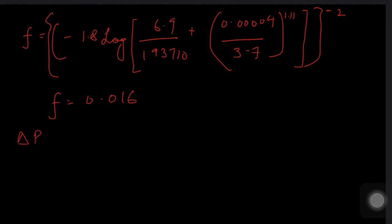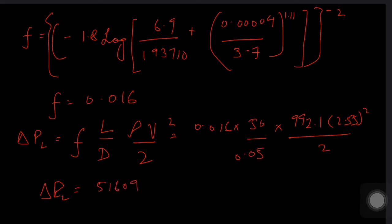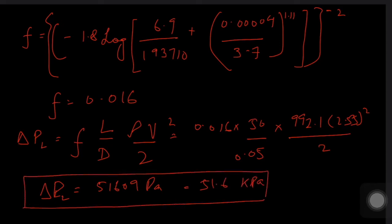Now that we know the friction factor, we use the pressure loss formula — valid for both turbulent and laminar flow: ΔP_L = f × (L/D) × (ρV²/2) = 0.016 × (50/0.05) × 992.1 × (2.55²/2), giving a pressure loss of approximately 51,609 Pa, or 51.6 kPa.